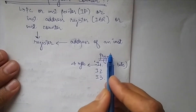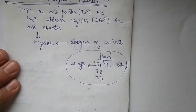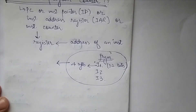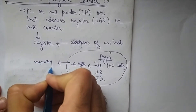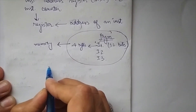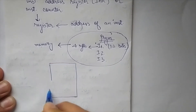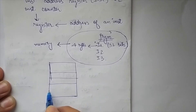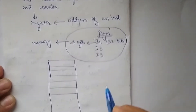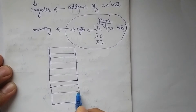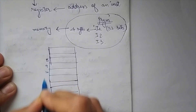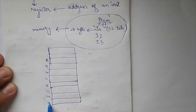To execute this program, Von Neumann architecture or any other architecture says that we have to first store this program into memory, then only we can execute it. So the first job is to store these three instructions into memory. Let's say we have this memory.